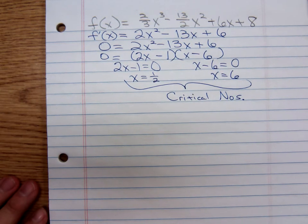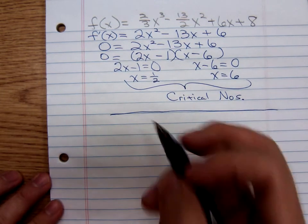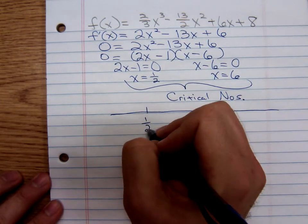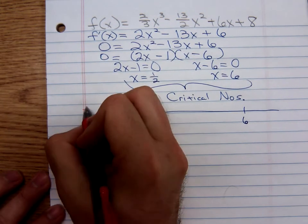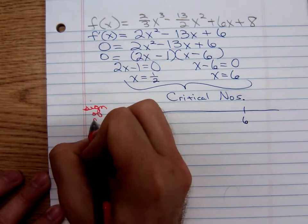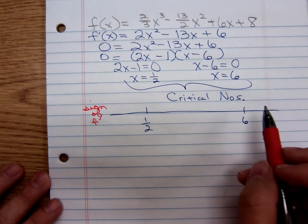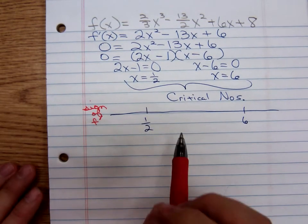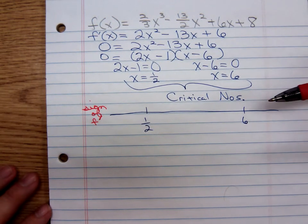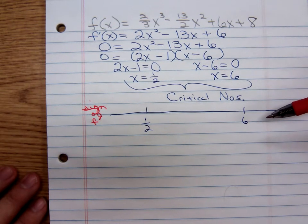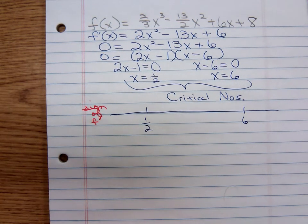What would I do next? I draw a number line. I have one-half and six, and we're looking at the sign of f prime. I write this out because on Tuesday, we're going to be doing something using the sign of f double prime. The concavity test looks very similar to this. You still wind up setting something equal to zero, finding these numbers and drawing a number line. But instead of using f prime, we're going to take the derivative of the derivative.